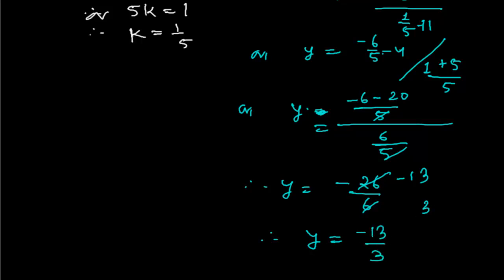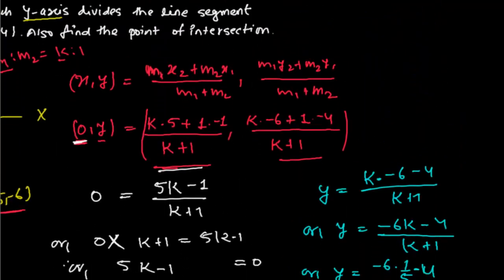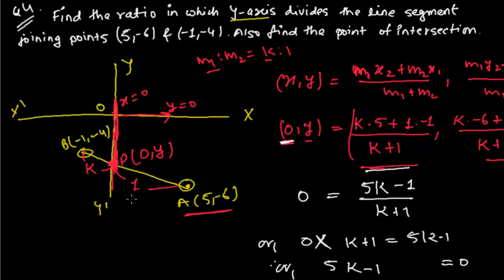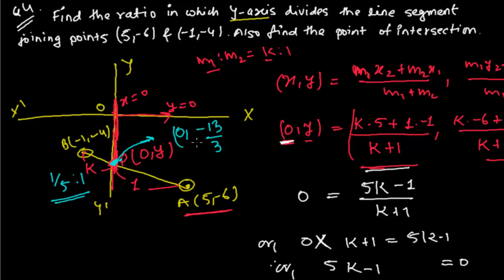We got all the values. The ratio is 1/5 : 1, and the point of intersection is 0 comma negative 13 upon 3. In the next video we'll be doing a problem related to the x-axis, where we'll also suppose the same ratio k : 1 and solve it in the same way.